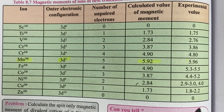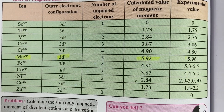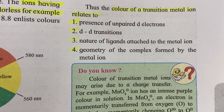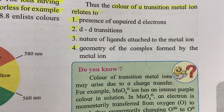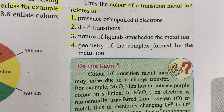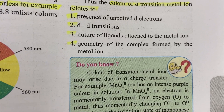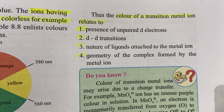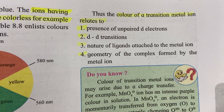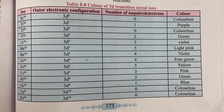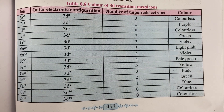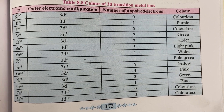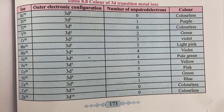The color of a transition metal ion relates to: the presence of unpaired d-electrons, d-d transitions, the nature of ligands attached to the metal ion, and the geometry of the complex formed. If there are no unpaired electrons, then the ion is colorless.